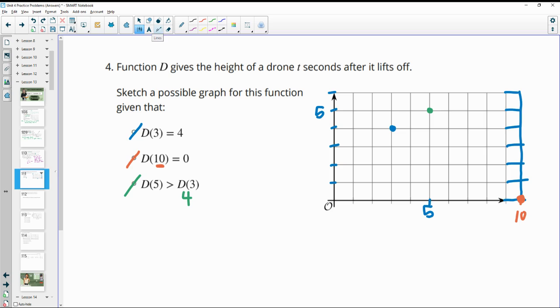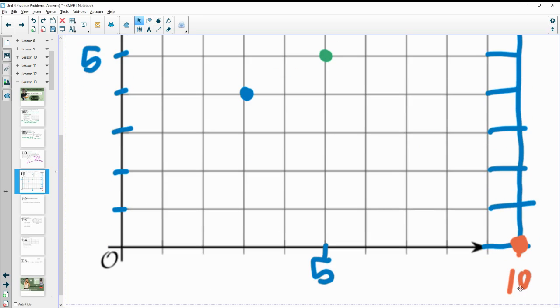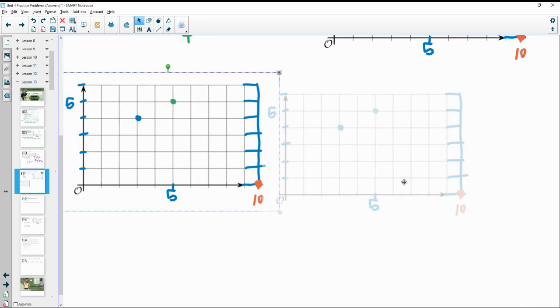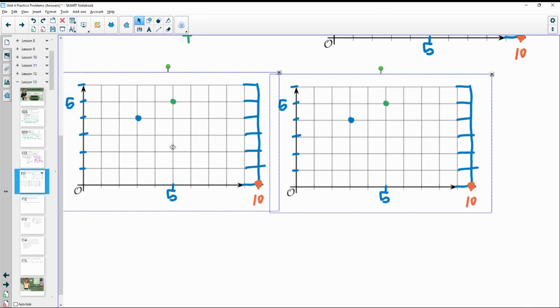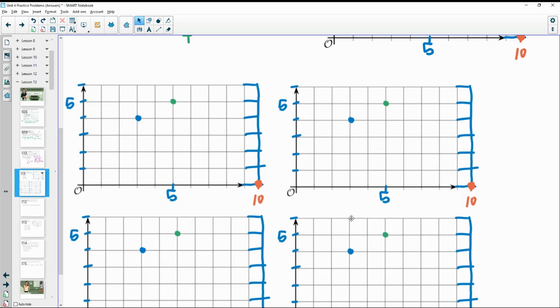And that's literally the only things you have to have happen with your graph. So you can have a lot of different graphs to this. So let me just get a screenshot here so that I can do a couple different examples. So these are the things that have to hold true in our graphs, but you could do multiple different graphs.